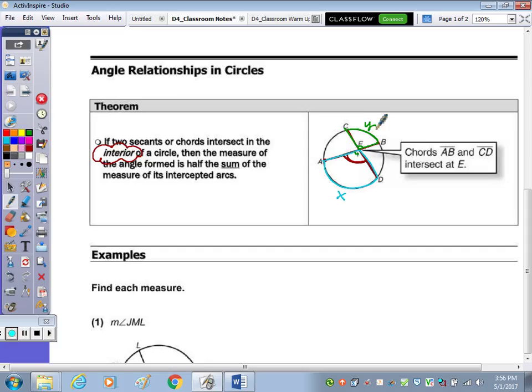The measure of angle 1, which is this angle right here, is, let's write that on the side, measure of angle 1 is half the sum of the arcs. So it would be one half of x plus y. So another way to do that is to just simply add them up, divide by 2. So looking at question 1, it says find each measure.